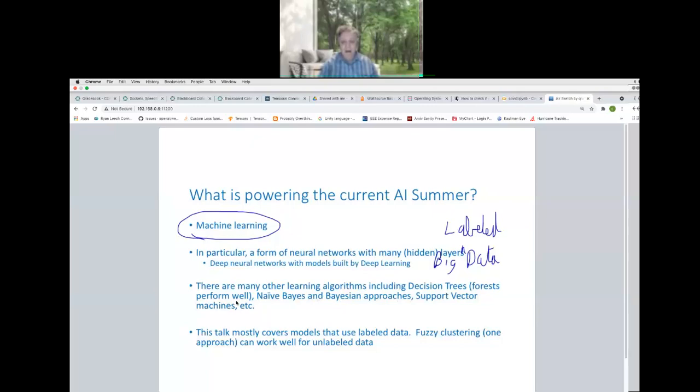So there are other learning algorithms, including decision trees, Naive Bayes, random forests which perform well. So a set of decision trees or an ensemble of them really perform well. Naive Bayes, Bayesian approaches, support vector machines, and lots of others. And these work pretty good with small data. So if you don't have a lot of labeled data, you're probably going to use this. And this talk is really going to focus on labeled data. If you don't have labeled data, you might use fuzzy clustering. You might use other clustering. The clustering works with unlabeled data and tries to group it based on its features.